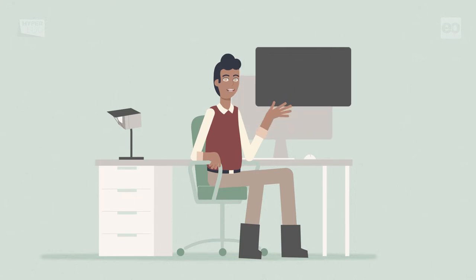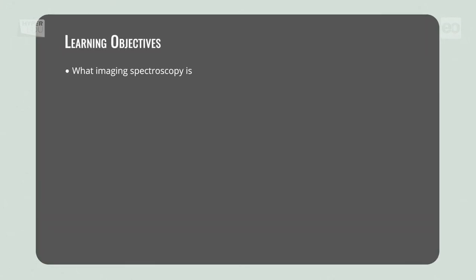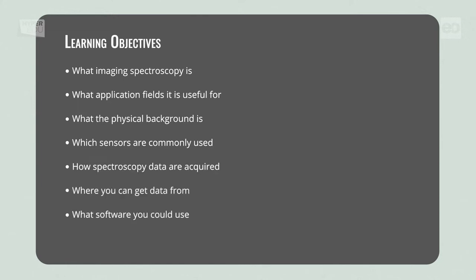If you have passed all the assignments, you should now have learned what imaging spectroscopy is, what application fields it is useful for, what the physical background is, which sensors are commonly used, how spectroscopy data are acquired, where you can get data from, what software you could use, and finally, first processing steps to analyze them.